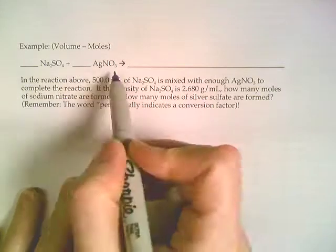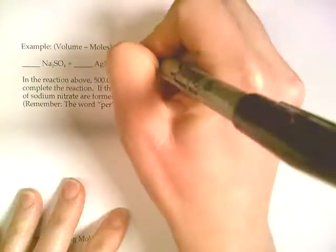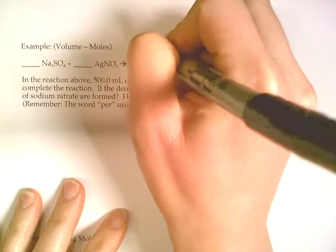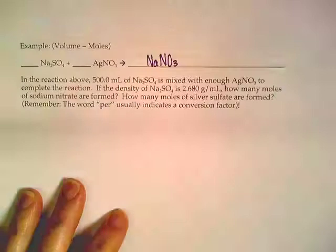The sodium part is going to combine with the nitrate portion. Na's plus 1, nitrate's minus 1, so that would make NaNO3.